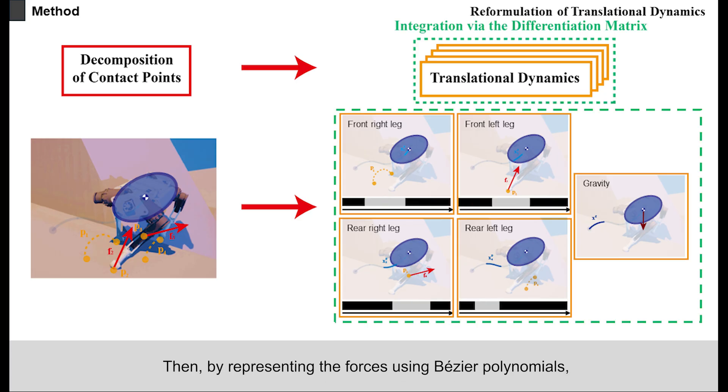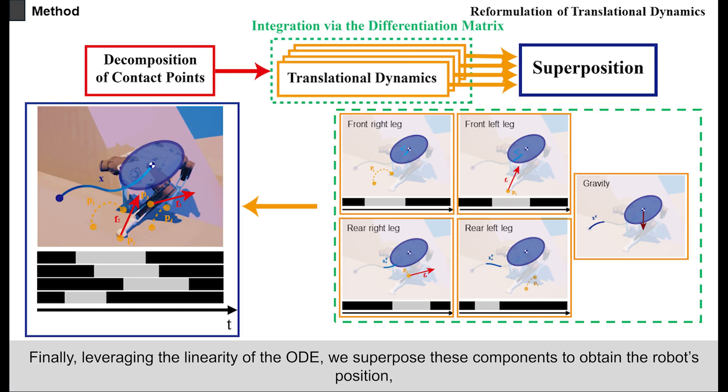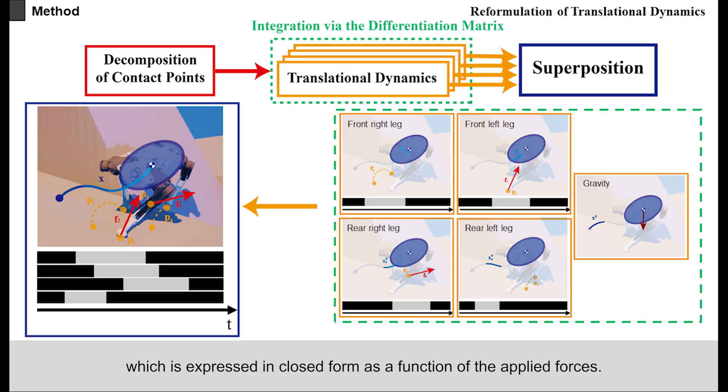Then, by representing the forces using Bezier polynomials, we derive a closed-form expression that relates the force and position components. Finally, leveraging the linearity of the ODE, we superpose these components to obtain the robot's position, which is expressed in closed form as a function of the applied forces.